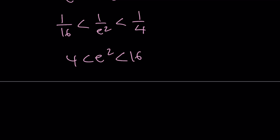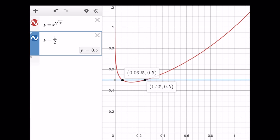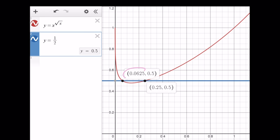Here's the graph. The graph shows you the intersection points exactly. 1 over 16 is this one, and this is 1 over 4. Obviously, the y value at that point is always going to be 1 half.